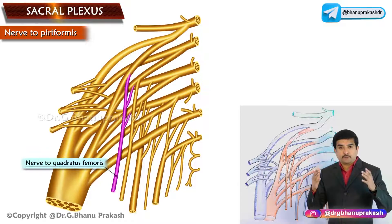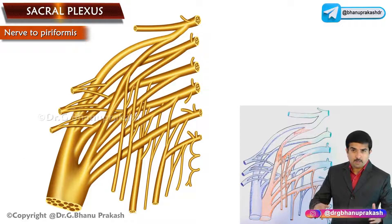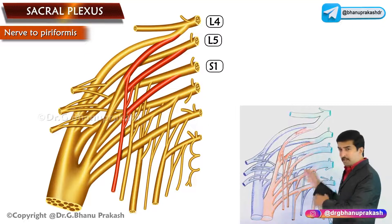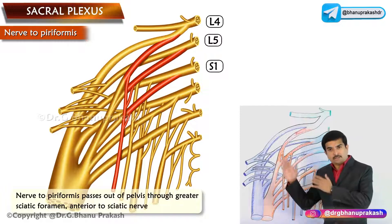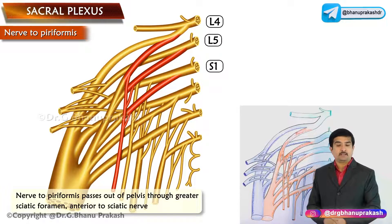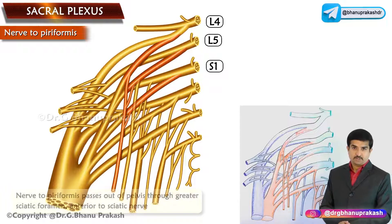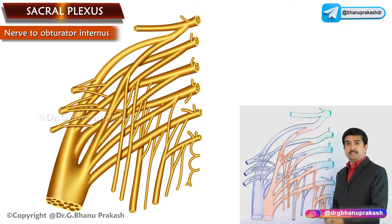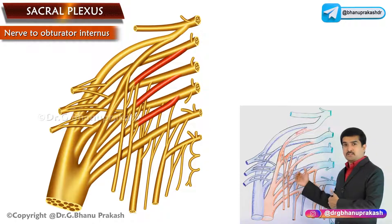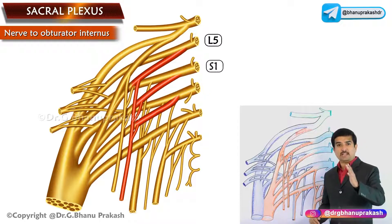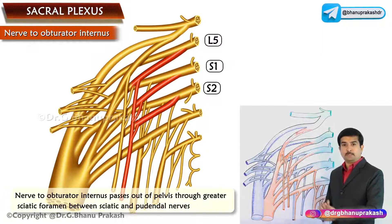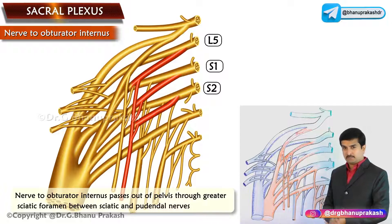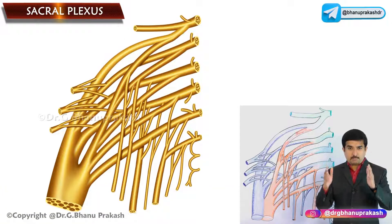The nerve to quadratus femoris is formed from ventral divisions of L4, L5, and S1. After emerging, it passes out of the pelvis through the greater sciatic foramen, anterior to the sciatic nerve. The nerve to obturator internus is formed from ventral divisions of L5, S1, and S2; it also passes through the greater sciatic foramen, between the sciatic and pudendal nerves.